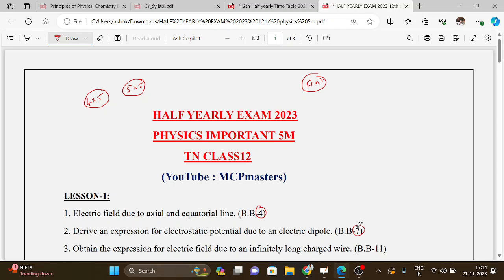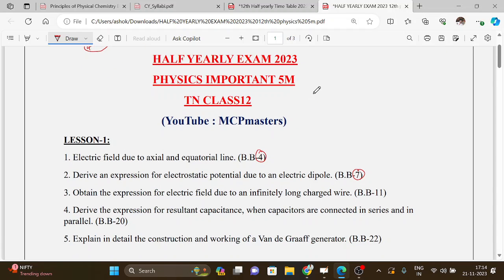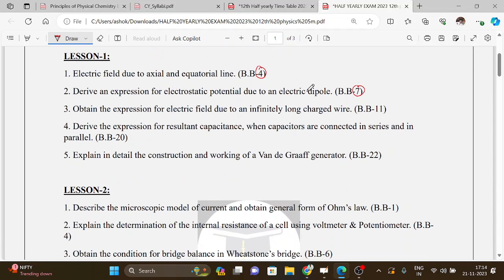You can refer to the book back question numbers. The PDF link is below, but you should review the same information as well. Lesson 1, Electrostatics - first question: Electric field due to axial line and equatorial line, book back fourth question.